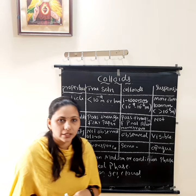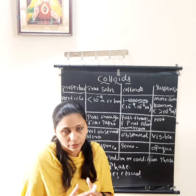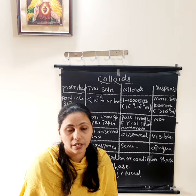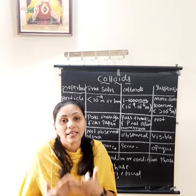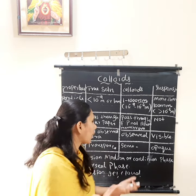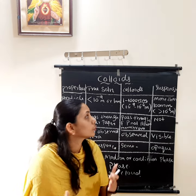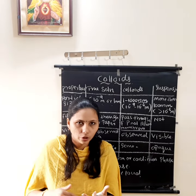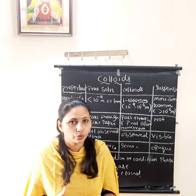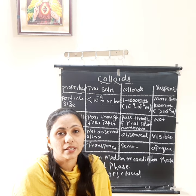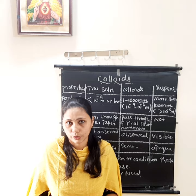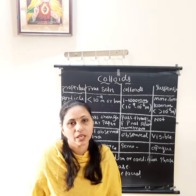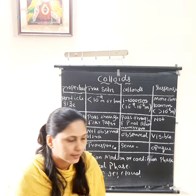The third property is visibility. True solutions are very small compared to colloids and suspension, so they are not visible even through an ultra microscope. Colloidal particles are a little bit larger than true solution, so they can be observed through an ultra microscope. Suspension particles are larger, so they can be seen directly.